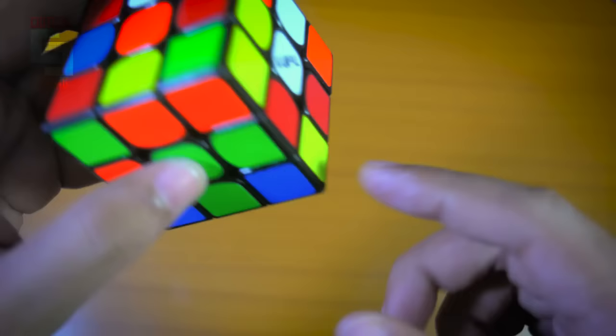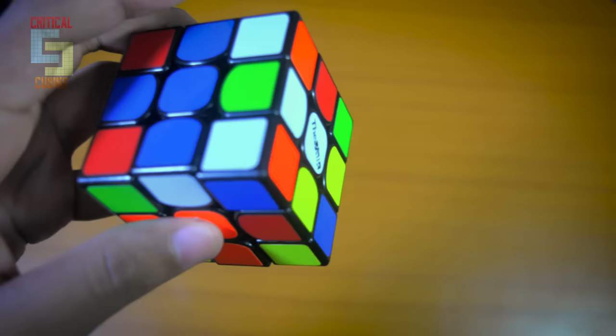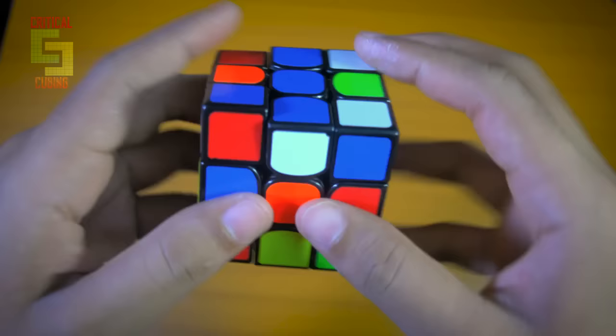However, the first pair is also quite easy. You have this pair, and this pair is only affected by the D move that you do for matching the center and the cross piece, and lastly the R2 move that you do for inserting this white cross edge.